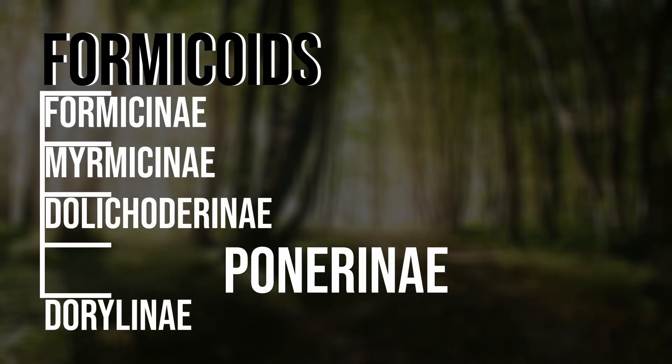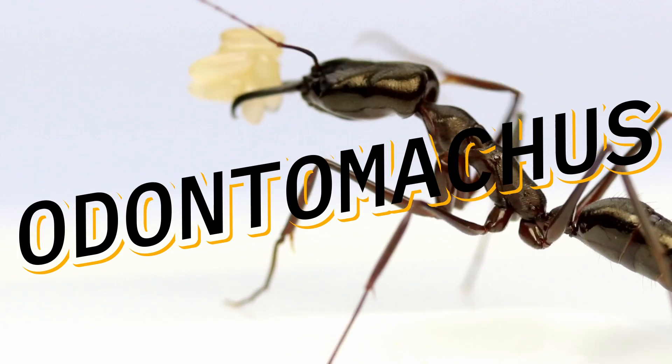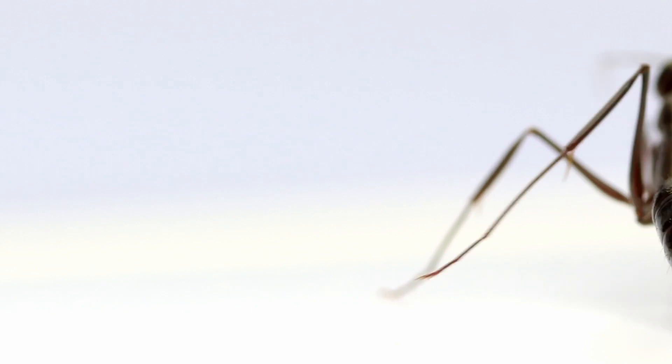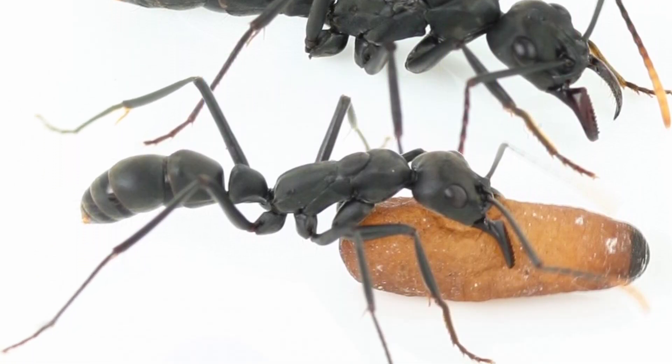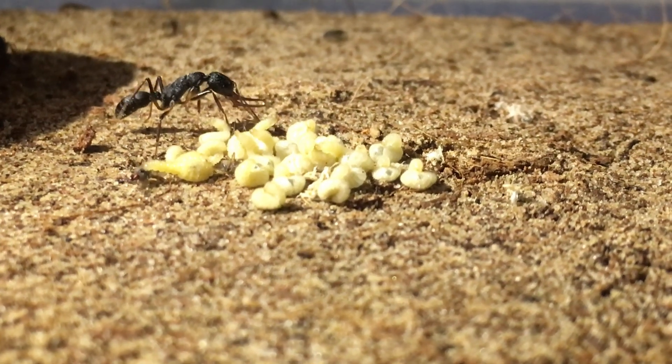Ponerinae — the primitive predators. These are ancient solitary hunters, so they don't act like all the other ants. They have powerful mandibles, a stinger, and simple social structures. They have a single petiole segment. Many are active hunters or scavengers, not team players. They're found mostly in tropical forests and leaf litter. Some species you might know: Odontomachus — trap-jaw ants with record-breaking mandible speed, faster than a bullet. Pachycondyla — tough ground-foraging predators. And Harpegnathos — in this species, some workers can even become queens.